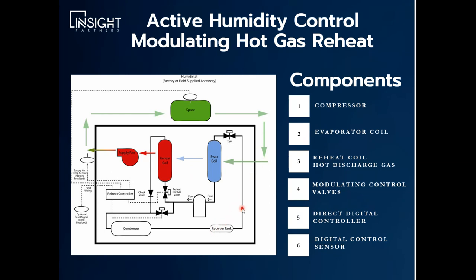Fully modulating hot gas reheat is an active humidity control process. I'm going to walk you through the refrigeration process in order to explain it. In a typical process, you have liquid coming out of your condenser that's fed to a TXV. That liquid is run through your evaporator coil where it's evaporated into a low pressure, low temperature gas. It's then sucked into the compressor where it is compressed into a high temperature, high pressure gas. In a normal refrigeration process, that high pressure gas would be fed back through the condenser where it would condense to liquid and repeat the process.